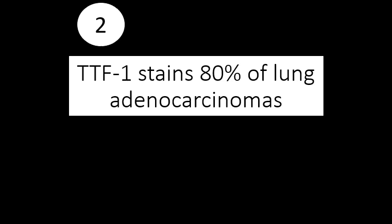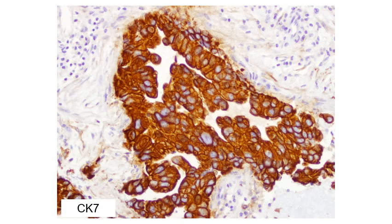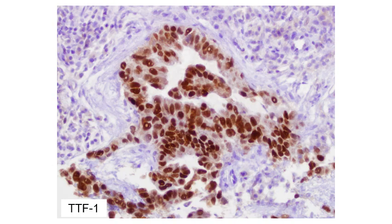In terms of tumors, the most important thing to remember is that TTF1 stains approximately 80% of lung adenocarcinomas — that is, the majority of adenocarcinomas that are primary to the lung. Here's an example of a gland-forming malignant tumor, an adenocarcinoma found in a lung. Lung adenocarcinomas are typically positive for CK7, typically negative for CK20, and they are strongly and diffusely positive for TTF1. This is the classic immunohistochemical profile of an adenocarcinoma that is primary to the lung.